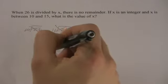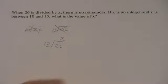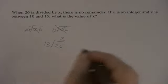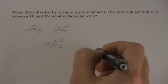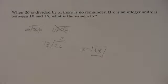It's not until we get to 13 that we realize 13 goes into 26 evenly. It goes in twice. So the value of x in this case is going to be 13, because it was the integer we were looking for.